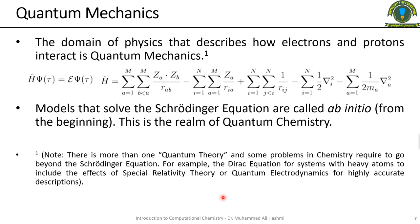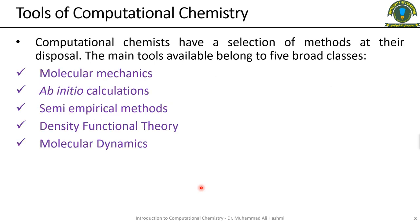Note that there is more than one quantum theory, and some problems in chemistry require going beyond the Schrödinger equation — for example, the Dirac equation for systems with heavy atoms to include the effects of special relativity, or quantum electrodynamics for highly accurate descriptions. The basis, however, is the Schrödinger wave equation.